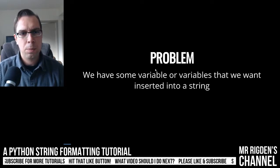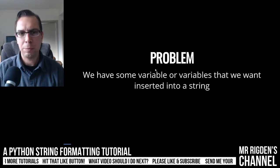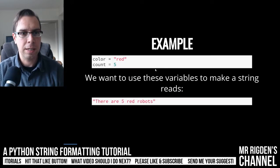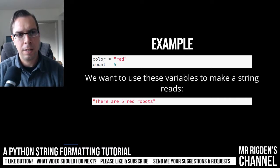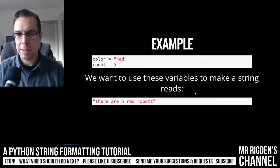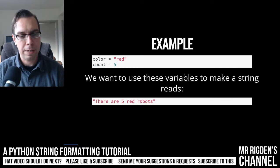Okay, so we have a bit of a problem. We have some variable or variables that we need inserted into a string. For example, we've got the color red here, count five, and we want to use these variables to make a string that reads, there are five red robots.